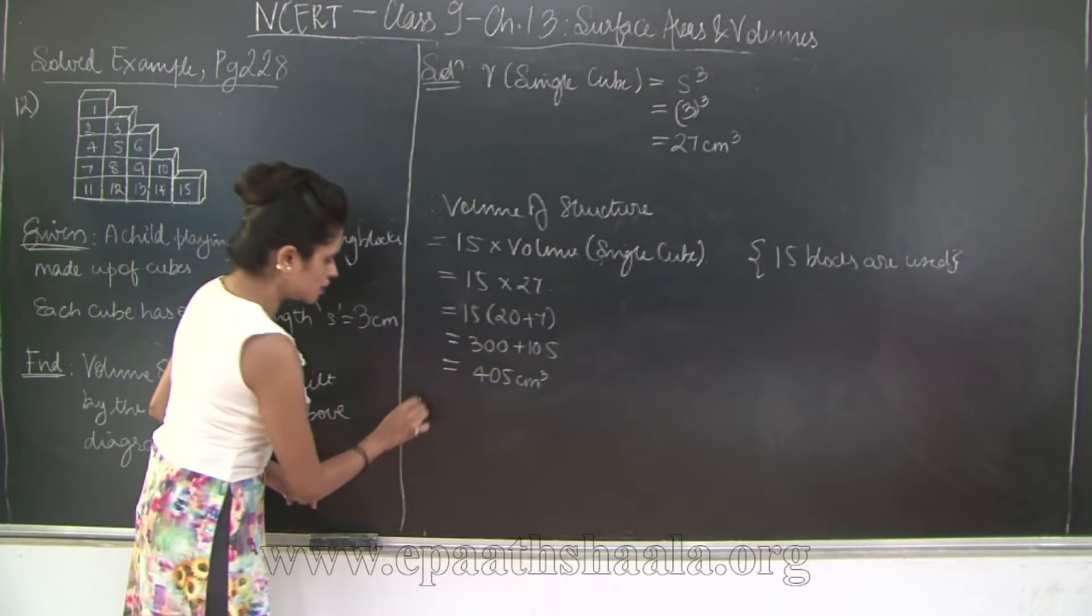So, this is the volume of the structure. You will write the answer. Volume of the structure is 405 cm cubed. So, here is the solution. Please take a look.